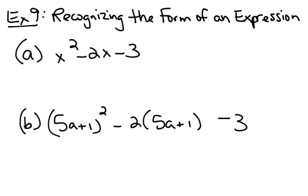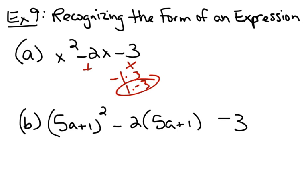This is the hard part of factoring: recognizing the form of an expression. Factoring tends to be difficult because students look at a problem and they're like, I don't know what method to use. That really just comes with practice. In example 9a, I hope that at this point you could recognize that as a general trinomial where you want to look for two numbers that multiply to give you negative 3 and add to give you negative 2. You don't have a lot of choices — those are the only pairs of numbers that multiply to give you negative 3. This pair gives you negative 2, so the factored form is x plus 1, x minus 3.